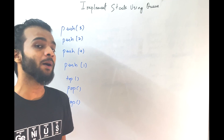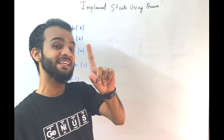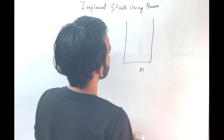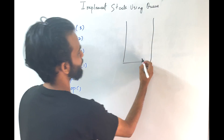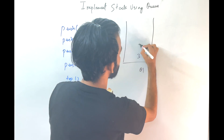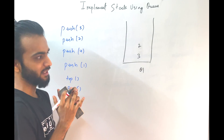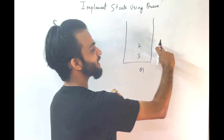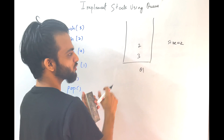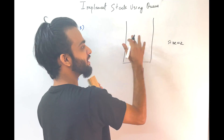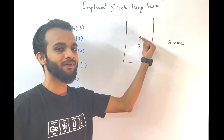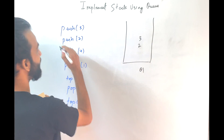The previous solution used a couple of queues, but can we implement a stack using a single queue? Yes, we can. We're going to take a single queue. Push of 3 — just push 3. Push of 2 — push 2 into it. Now the queue size is 2, so iterate one less than that — once — and take the topmost element and push it again.